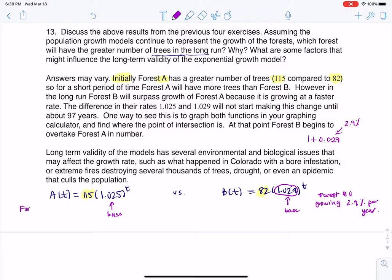Now, Forest A is growing at a slower rate. So Forest A grows at 2.5% per year. And so you can see that Forest B has the higher growth rate. So even though it starts with fewer initial trees, it will overtake Forest A. So in terms of long run, that's why you see me saying Forest B is going to overtake Forest A.